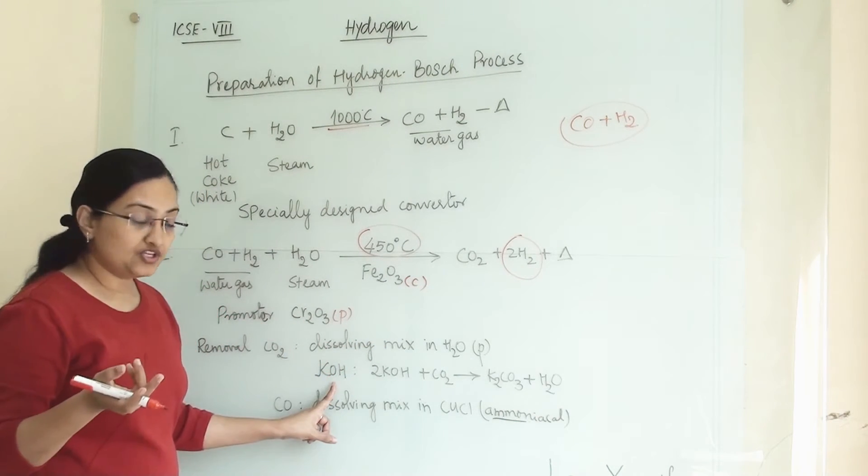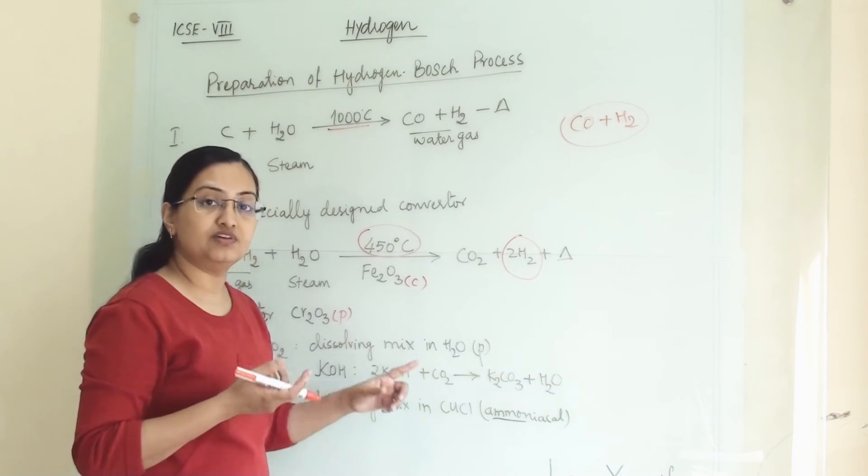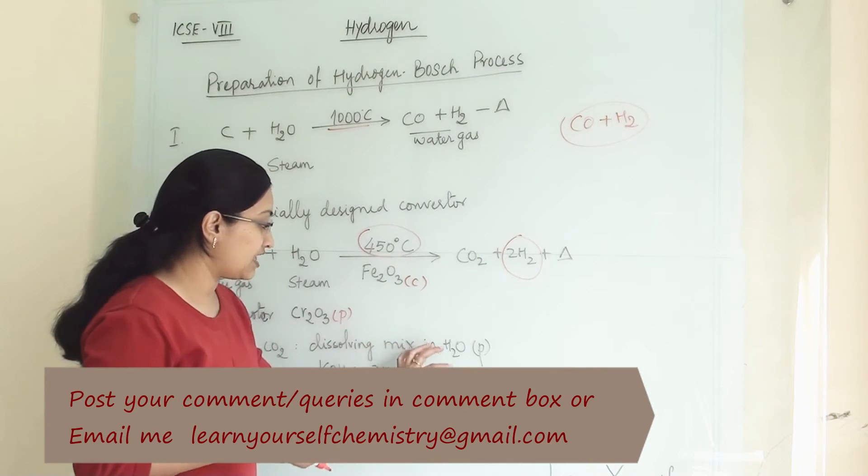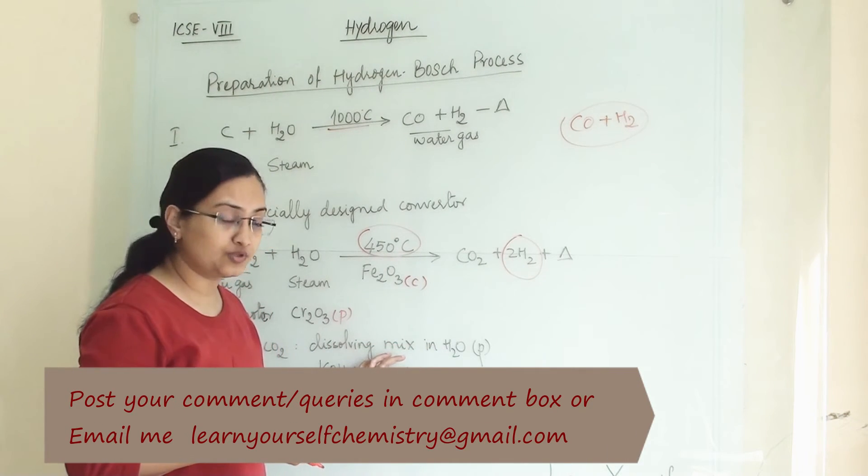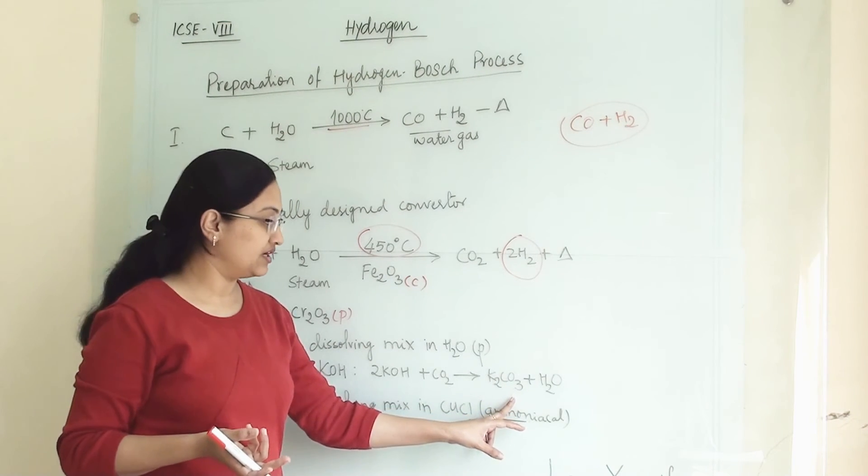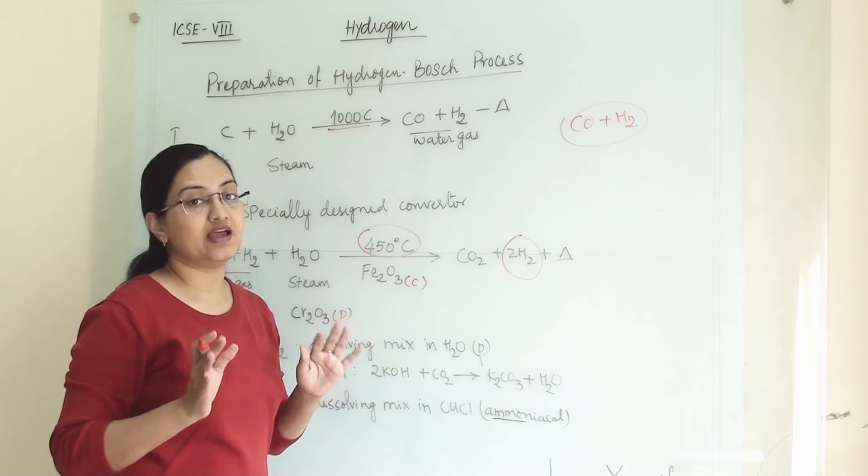Then potassium hydroxide. We will dissolve this mixture in potassium hydroxide. Carbon dioxide will react with potassium hydroxide and will give us potassium carbonate and H2O. And hydrogen gas will remain as it is.